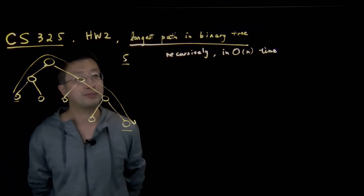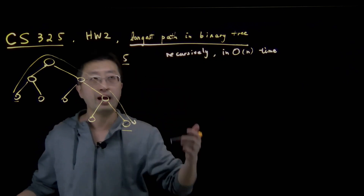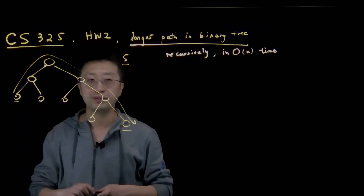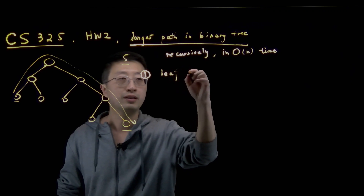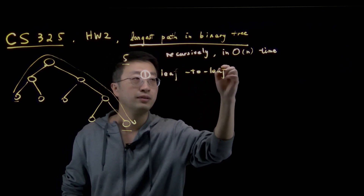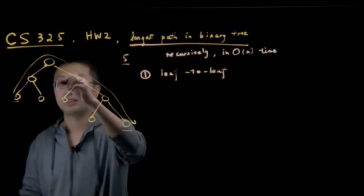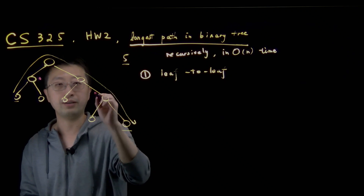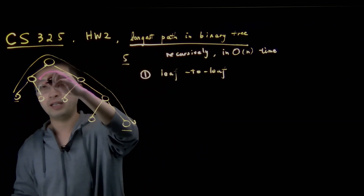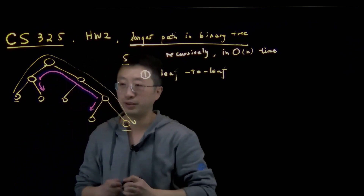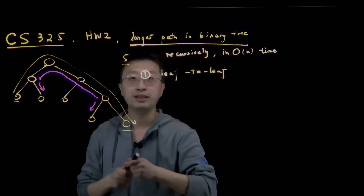How would you approach this problem? The first observation is that the longest path would obviously be from one leaf node to another leaf node. Why? Because if it's not from one leaf node to another leaf node, we can tell it's not the longest path, because you can always extend by going further down to a leaf node. Leaf nodes you cannot go further down below. So you have to start from one leaf node and end at another leaf node.